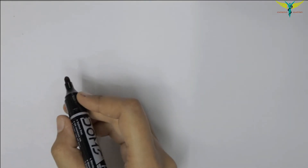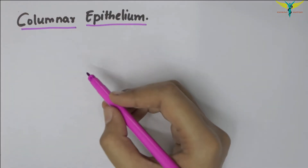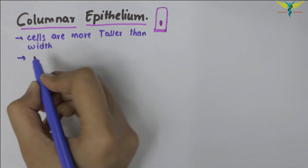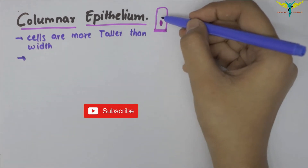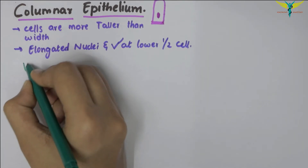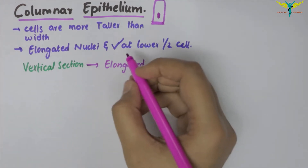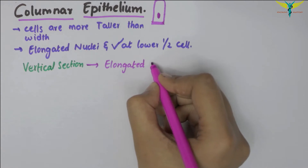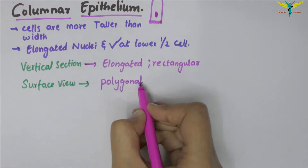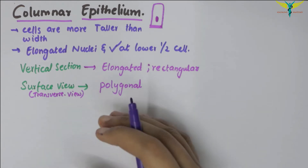In this video, let's learn about the columnar epithelium. In the columnar epithelium, the cells are much taller when compared to their width. The nuclei are elongated and located in the lower half of the cell. In the vertical section, the cells are elongated and rectangular in shape, and on the surface view the cells are polygonal.